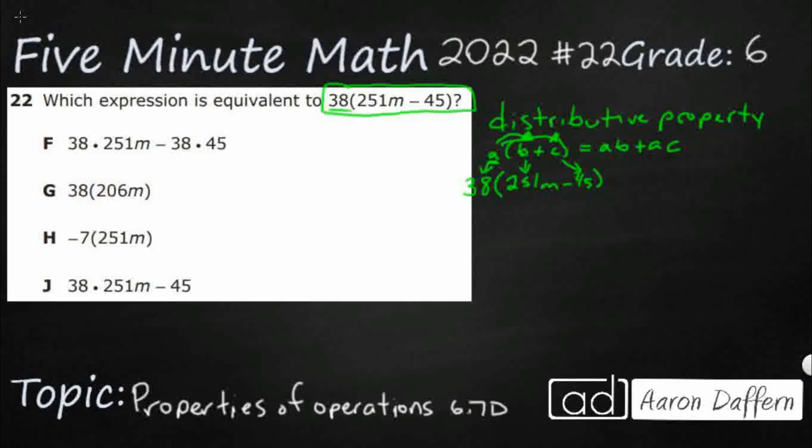So, if I were to use this example, instead of subtracting 251M and 45 and then multiplying it by 38, what the distributive property says is I can take my 38, multiply it by this, and then multiply it by that, and then subtract the two. So, let's see what that looks like.